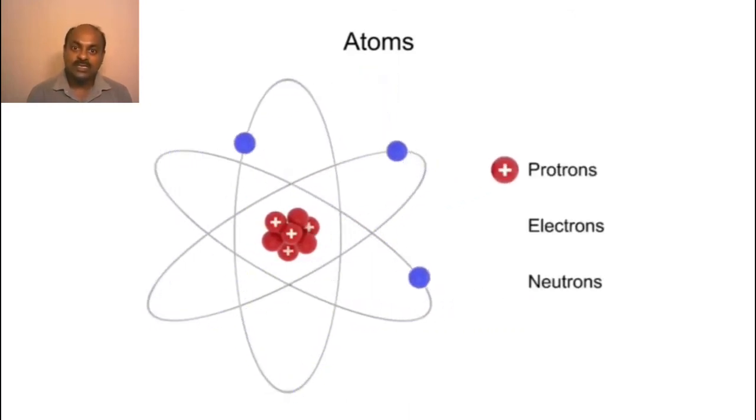The nucleus consists of positively charged particles called protons and particles with no charge called neutrons. The electrons have a negative charge.